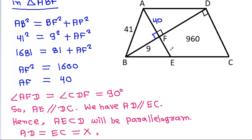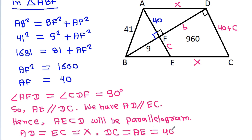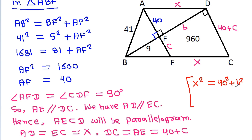Suppose AD is X and EC is X. And suppose FD is B and FE is C. Then DC will be equal to 40 plus C. DC will be equal to AE, that will be 40 plus C. So we need to find the value of B.